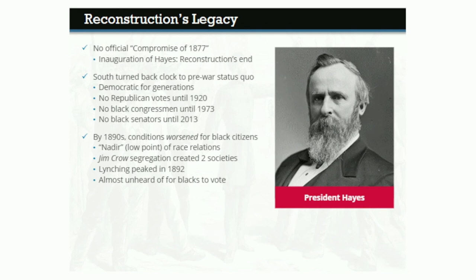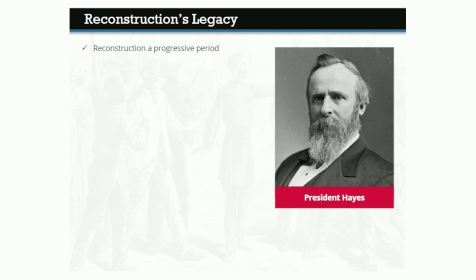Political white supremacy made it almost unheard of for blacks to vote despite the Constitution's clear guarantee of that right. It would take almost another century — until the civil rights movement of the 1950s and 1960s — for Reconstruction to be, in a sense, revived and completed. The era of Reconstruction is not a story with a happy ending. Reformers and free people alike made impressive progress in the face of intense opposition, and Reconstruction was in some ways the most progressive period of American history up to that point. But Americans lacked the will and the determination to see the project to its conclusion, and North and South alike turned away from guaranteeing the rights promised by their own Constitution.